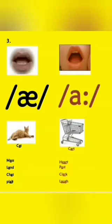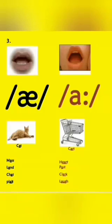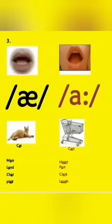For the long counterpart, we have 'ar' as in 'cart' — the one you use at the shopping mall — along with 'heart,' 'past,' 'clock,' and 'laugh.' So we compare the short 'a' as in 'cat' with the long 'ar' as in 'cart.' The mouth positioning is very key to getting these sounds right. You can form your own examples to compare and contrast these sounds.